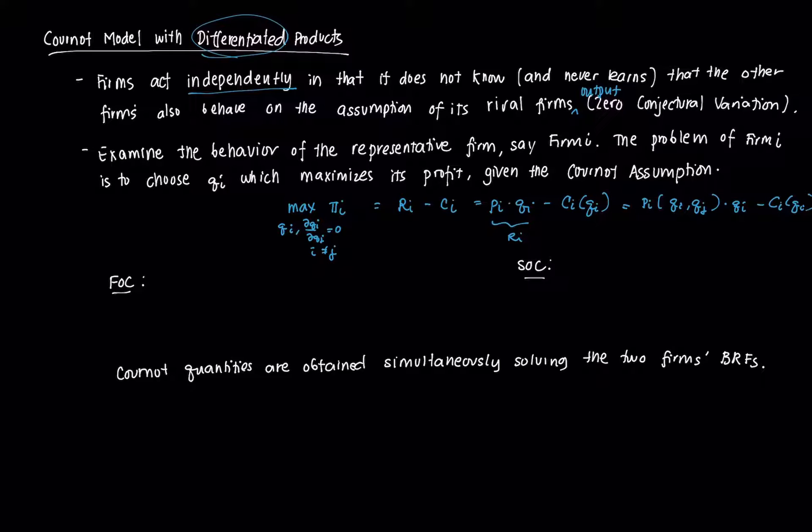If we solve for the maximum profit, the first-order condition (FOC) would be that we need to derive the profit function with respect to the quantity of firm i and equate that to zero. For the second-order condition (SOC), that's just proving we're at a maximum, so the second-order derivative should be negative.